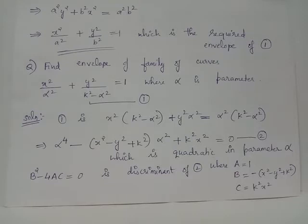When we group terms independent of α² and α⁴, we will get k²x². Thus, we arrive at equation 2.